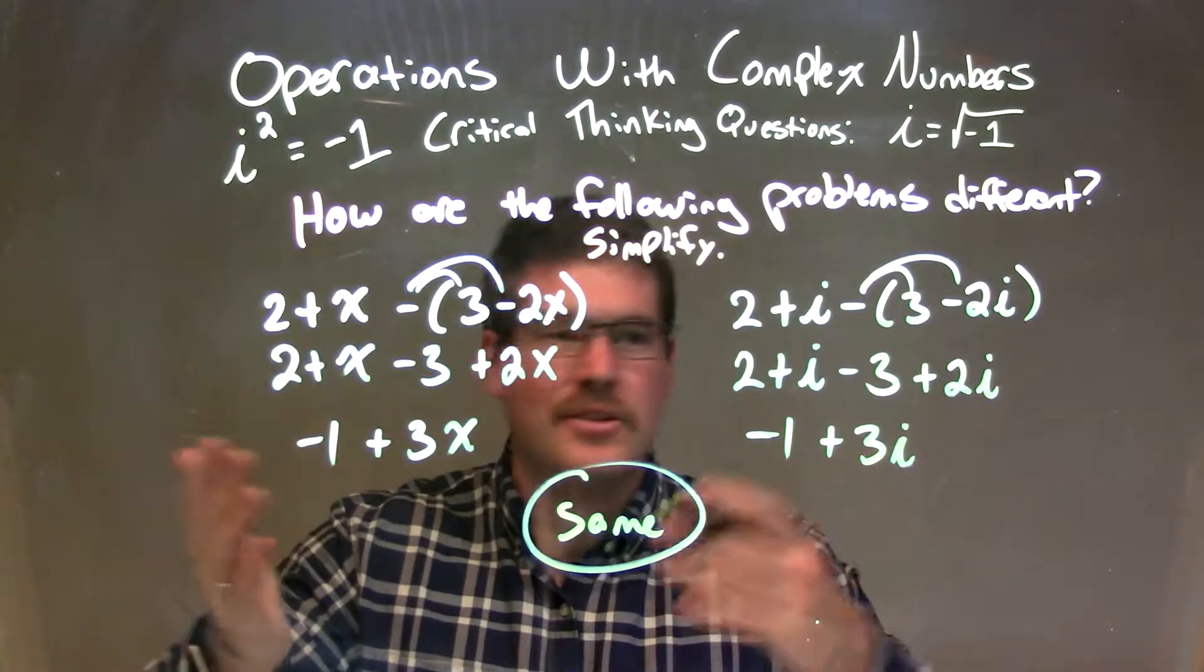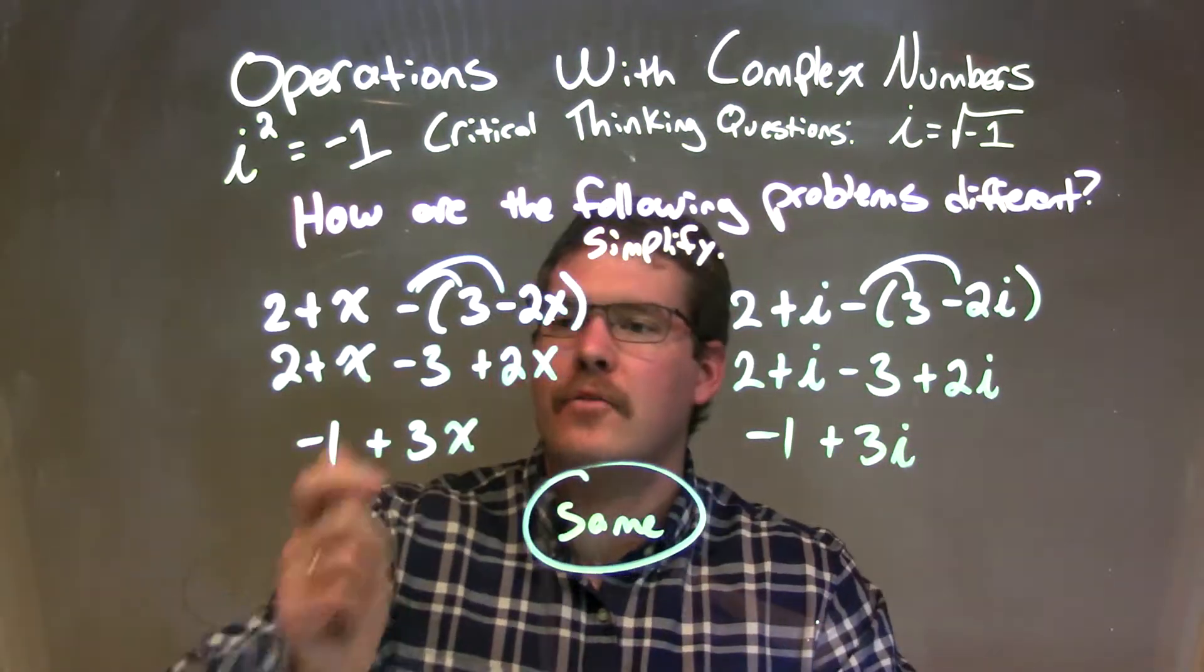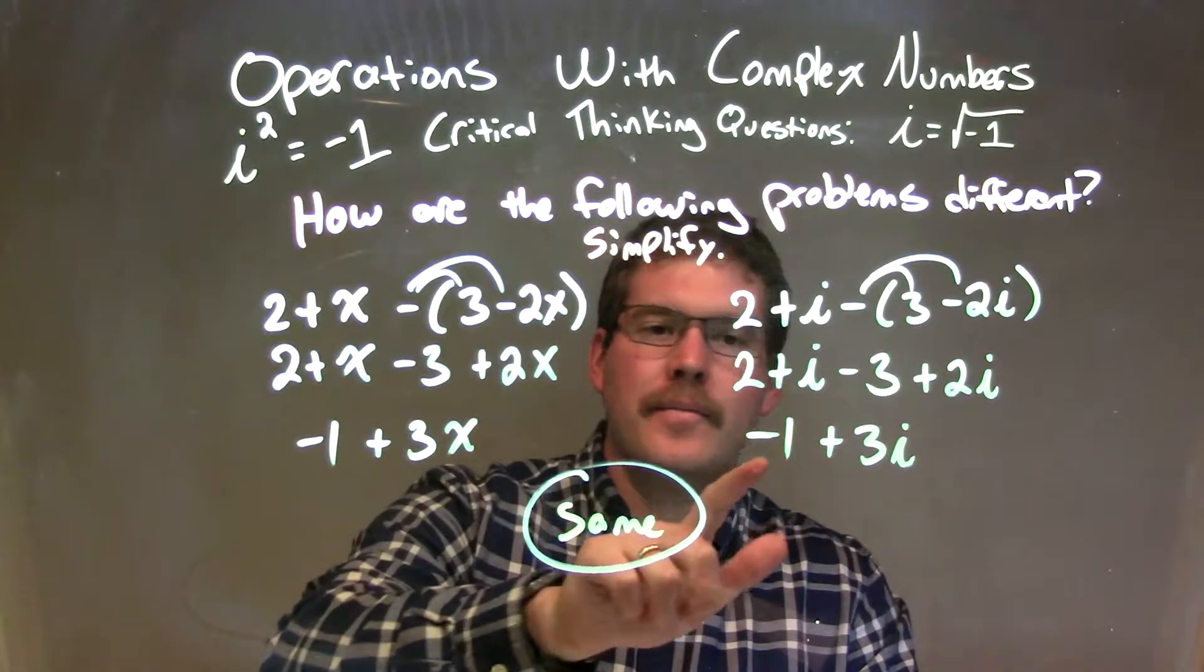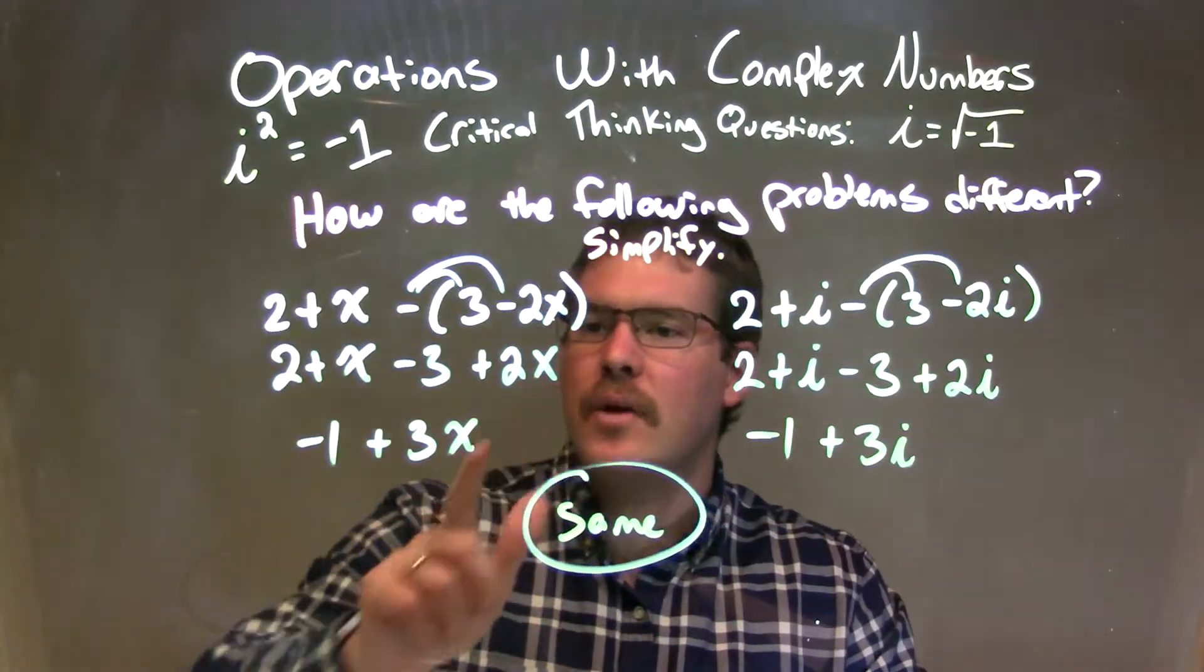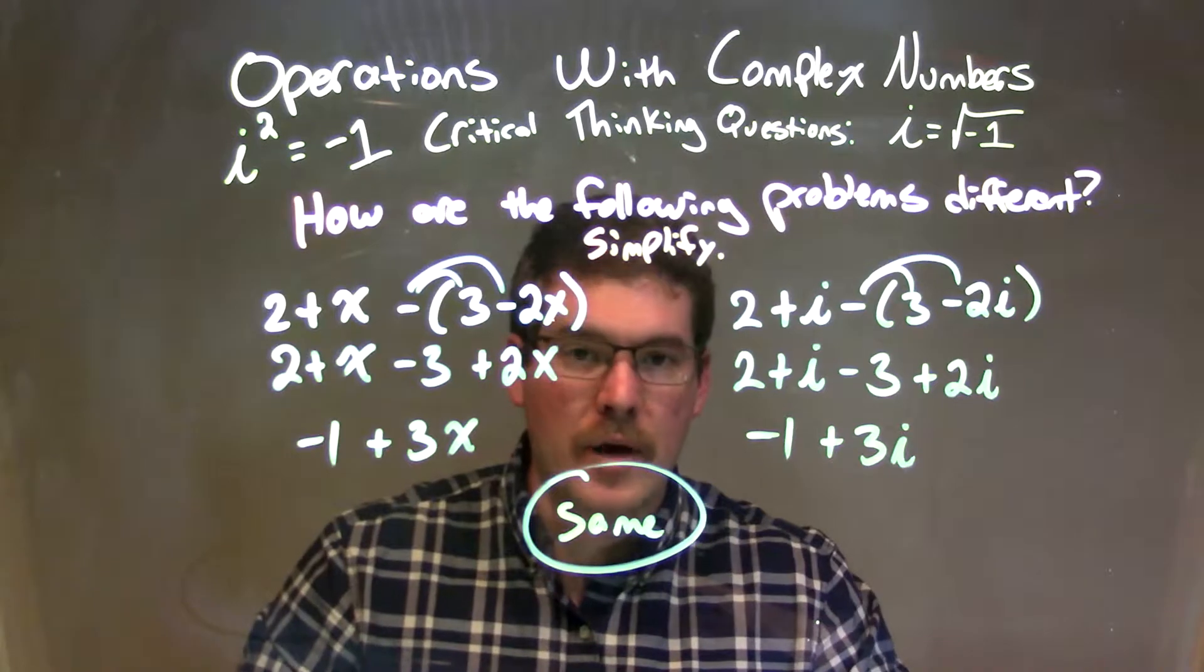From there, we combined our like terms and like numbers. 2 and minus 3 became a negative 1, right there and here. And x and 2x became 3x and here i and 2i became a positive 3i.